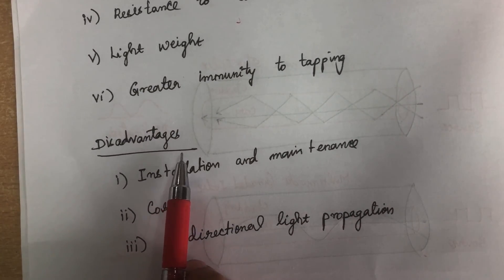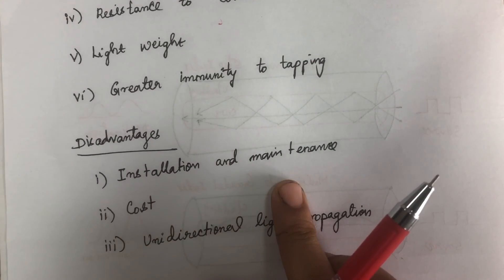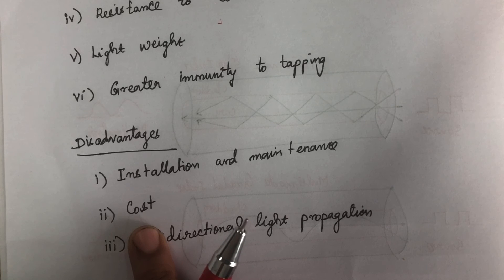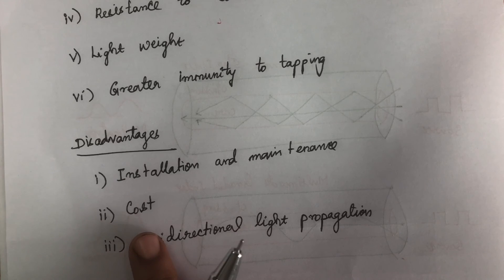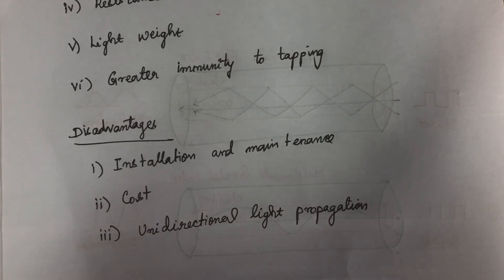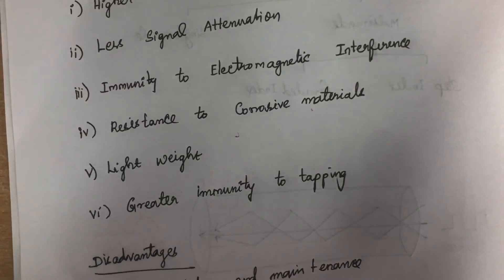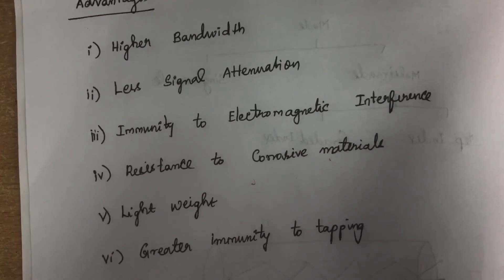The disadvantages of fiber optic cable are: installation and maintenance costs are high and require expertise; the cost of establishing the cable and interfaces is more compared to other cables; and light propagation is unidirectional — if bidirectional communication is needed, two fibers must be used. These are all the advantages and disadvantages of fiber optic cable.